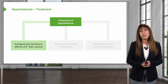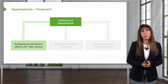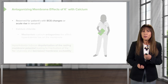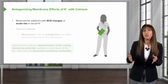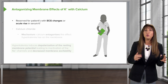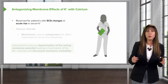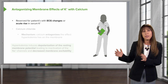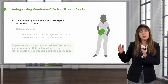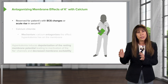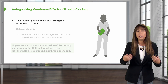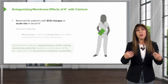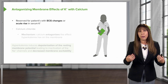Let's talk about antagonizing membrane effects of potassium with calcium. This is really only going to be reserved for patients who have ECG changes or an acute rise in serum potassium. What I want to tell you is that this does absolutely nothing for removing potassium — this is only to protect cardiac myocytes.